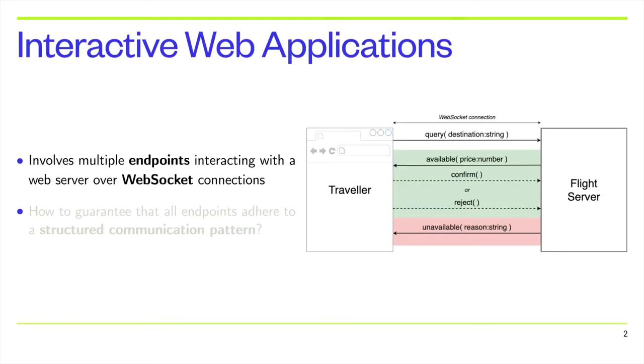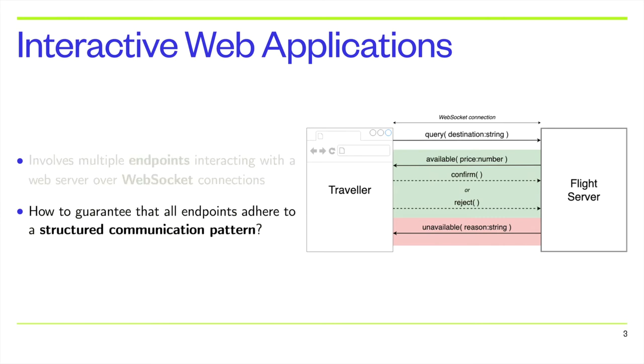Developers can build interactive web applications with multiple roles or endpoints, interacting with a web server over web socket connections. The goal is to make sure that all endpoints agree on and adhere to a structured communication pattern. This is also referred to as a global protocol.